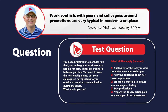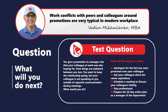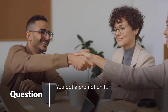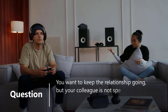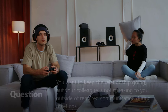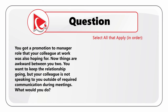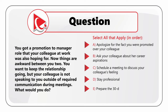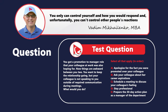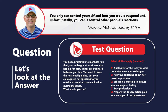You got promoted to a manager role that your colleague at work was also hoping for. Now things are awkward between you two — you want to keep the relationship going, but your colleague is not speaking to you outside of required communications during team meetings. You have five choices — select all that apply in order. Choice A: apologize for the fact that you were promoted over your colleague. Choice B: ask your colleague about her career aspirations. Choice C: schedule a meeting to discuss your colleague's feelings. Choice D: stay professional. Choice E: prepare a 30-day action plan as manager of the department.